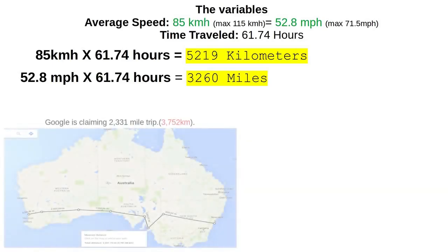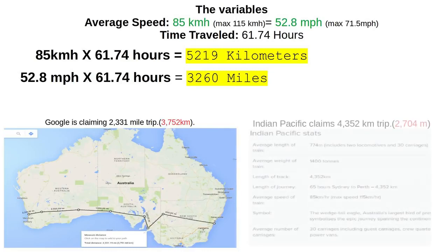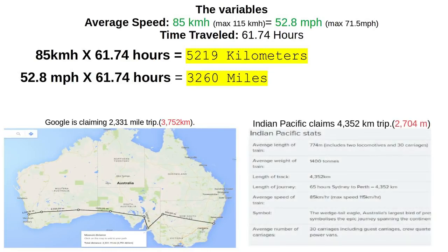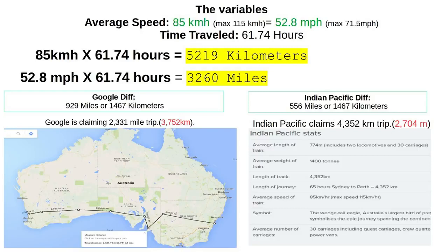When we compare against Google there's a dramatic difference — 929 miles or 1,467 kilometers between the speed-times-time calculation and what Google shows on their map. For the Indian Pacific's own stated track distance, it comes out to a 556-mile difference. Just to give you an example of scale, 556 miles would be half of California on a north-south orientation — that's a big chunk of land.